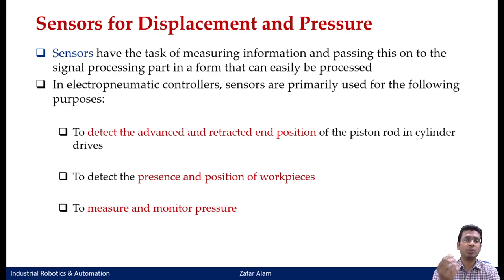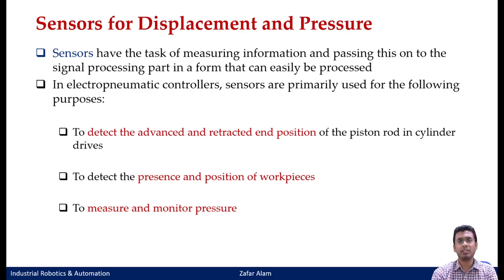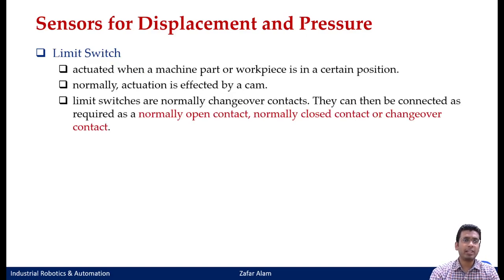Since we are working in a pneumatic or hydraulic range, sensors are also used to measure pressure in the line, as many activities will depend upon the pressure in the circuits. To detect position or distance, the first type of sensor we use is the limit switch. A limit switch is actuated when a machine part or workpiece is in a certain position — the actuation is normally effected by a cam, meaning you have a physical contact. Like your roller valve in a pneumatic circuit, limit switches can also be normally open, normally closed, or changeover contact type, but they output electrical signals instead of pneumatic signals.